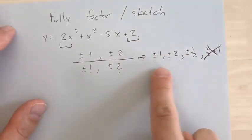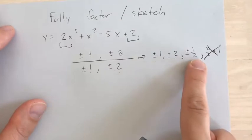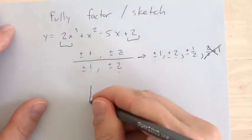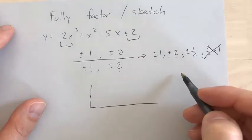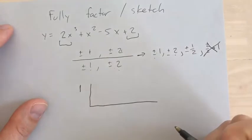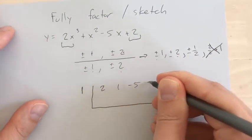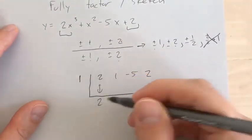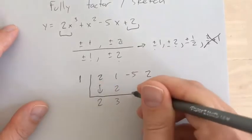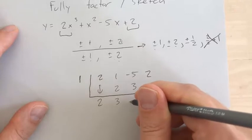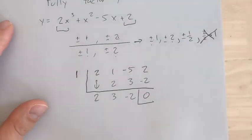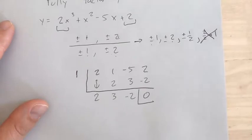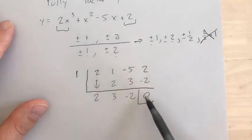Now that I have my options, I'm going to divide one of these x-intercepts into this polynomial. Because these are x-intercepts, synthetic division is really our best bet. I'm going to pick one at random — not all of these will work, so you have to go until you find one that gives a remainder of 0. Let's start with just 1. Using an x-intercept of 1, I put the coefficients in. Drop this down: 2. 1 times 2 is 2. 1 plus 2 is 3. 1 times 3 is 3. Negative 5 plus 3 is negative 2. And 1 times negative 2, we get negative 2. So that has a remainder of 0.